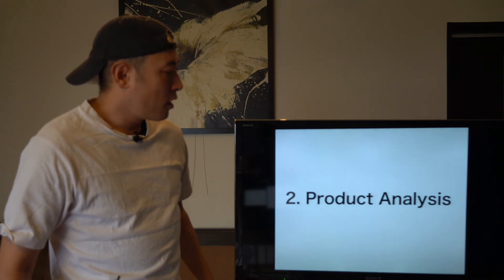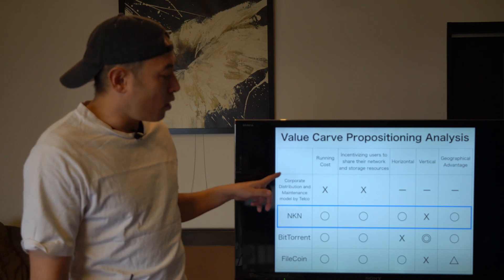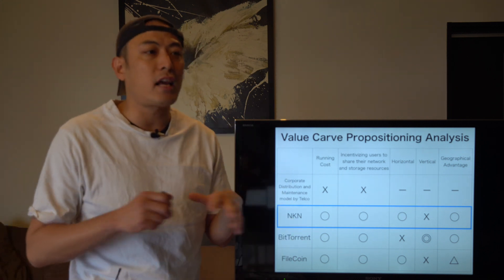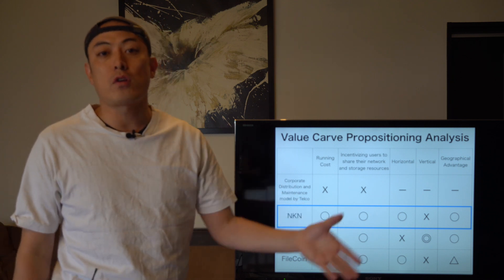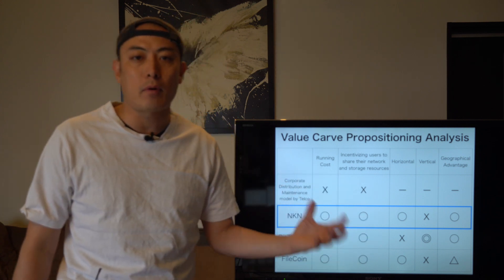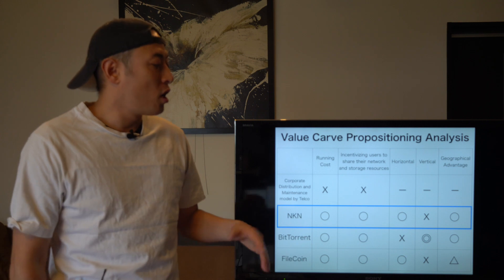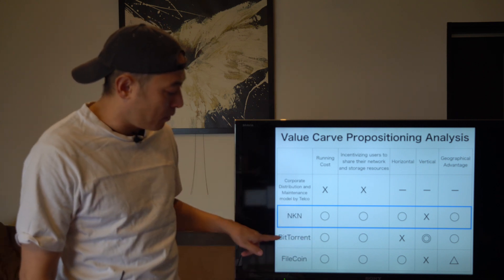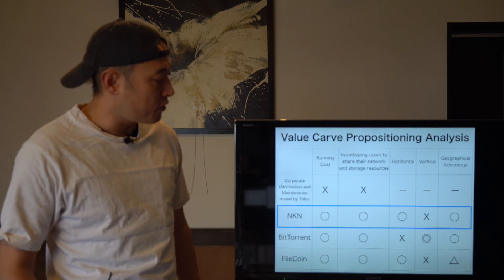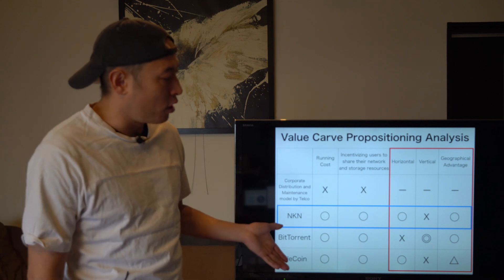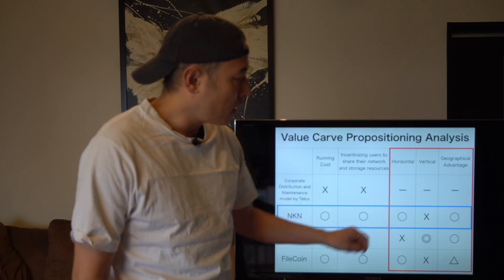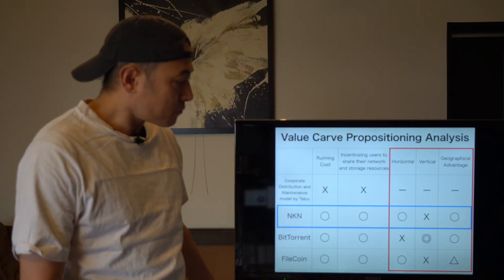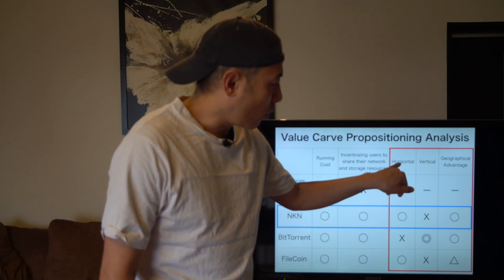For product analysis, NKN has a couple of competitors. The first is the corporate distribution and maintenance model by telecom carriers and mobile carriers, but as I said, that requires a lot of HR cost, so the incentivized P2P democratized model is much more scalable. In the blockchain space, they have competitors like BitTrend and Firecoin. The key differential points for NKN are: first, a horizontal approach, and second, a geographical advantage. Firecoin does not have these elements, and the horizontal approach is the most unique differentiator against BitTrend.